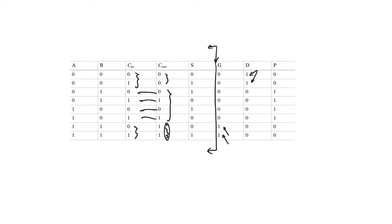For the first two rows, carry out is zero even though carry in could be zero or one, so we say the full adder is deleting and assert the D bit. For the four intermediate rows, carry out copies the value of carry in exactly, so we say the full adder is propagating the value of carry in to carry out.